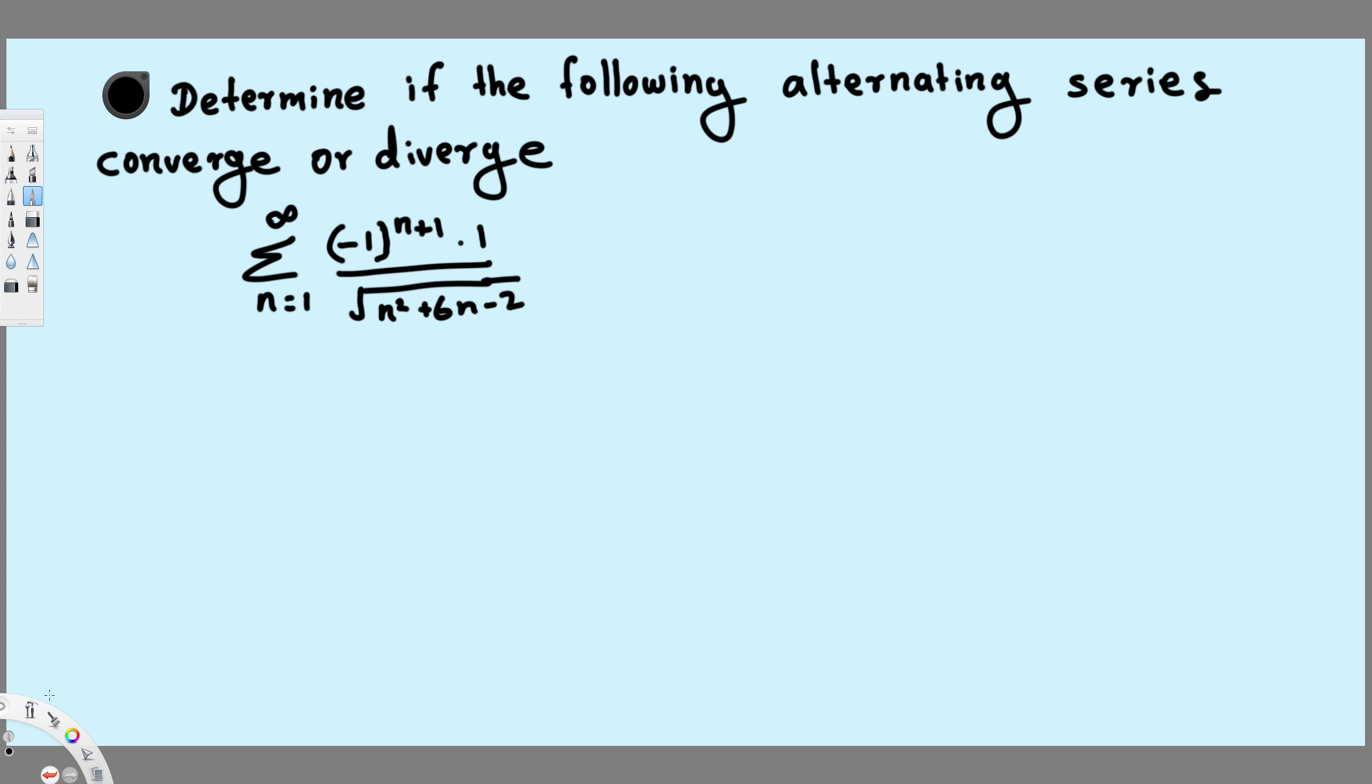Hey what's going on guys, let's do this problem right here. The question is asking determine if the following alternating series converge or diverge. So first of all what we do is pick up the BN value, that's going to be this value right here.